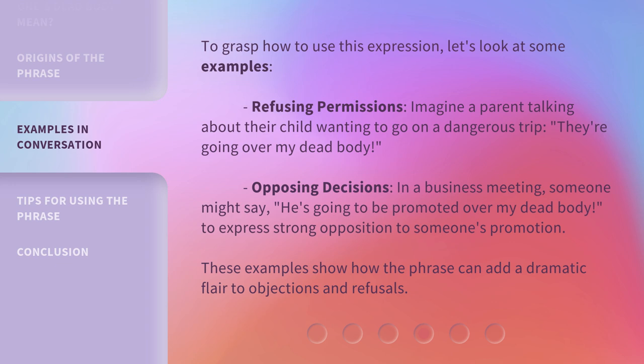Opposing decisions: in a business meeting, someone might say, 'He's going to be promoted over my dead body,' to express strong opposition to someone's promotion. These examples show how the phrase can add a dramatic flair to objections and refusals.